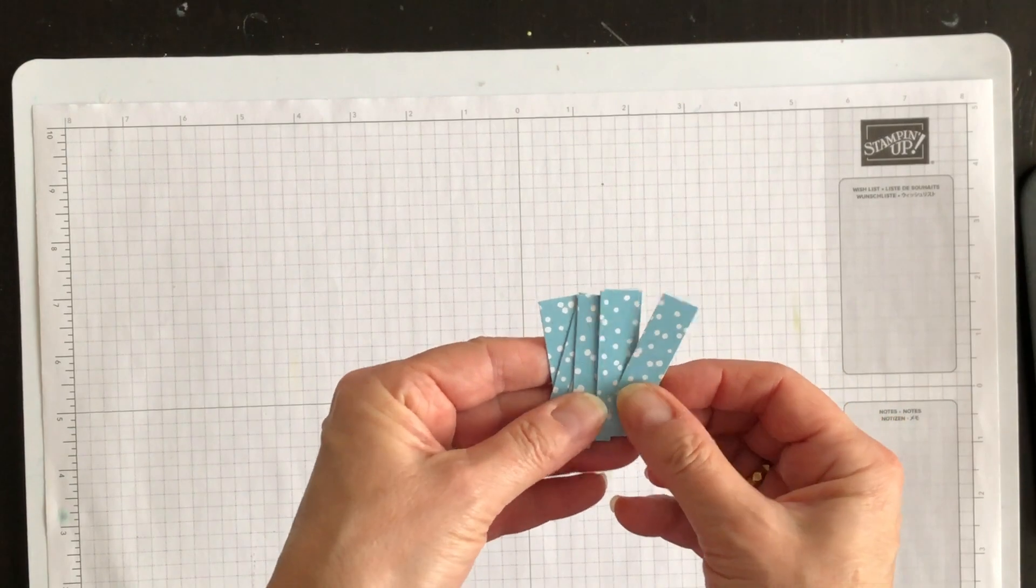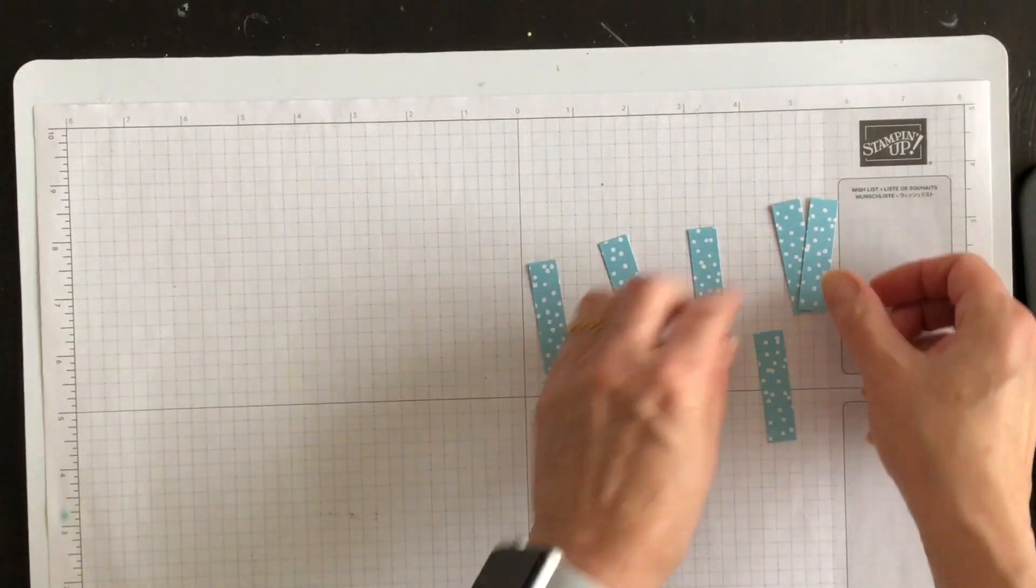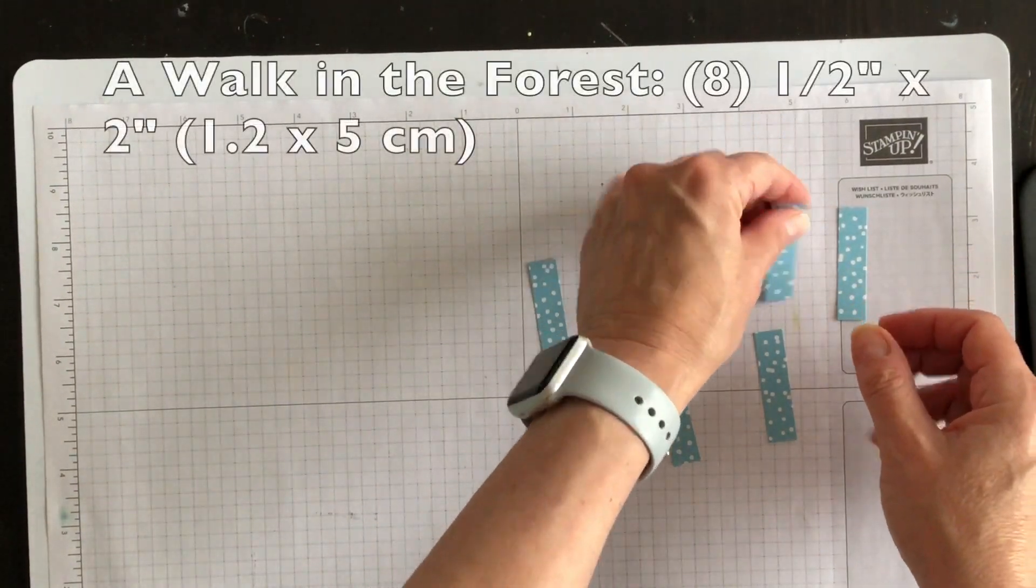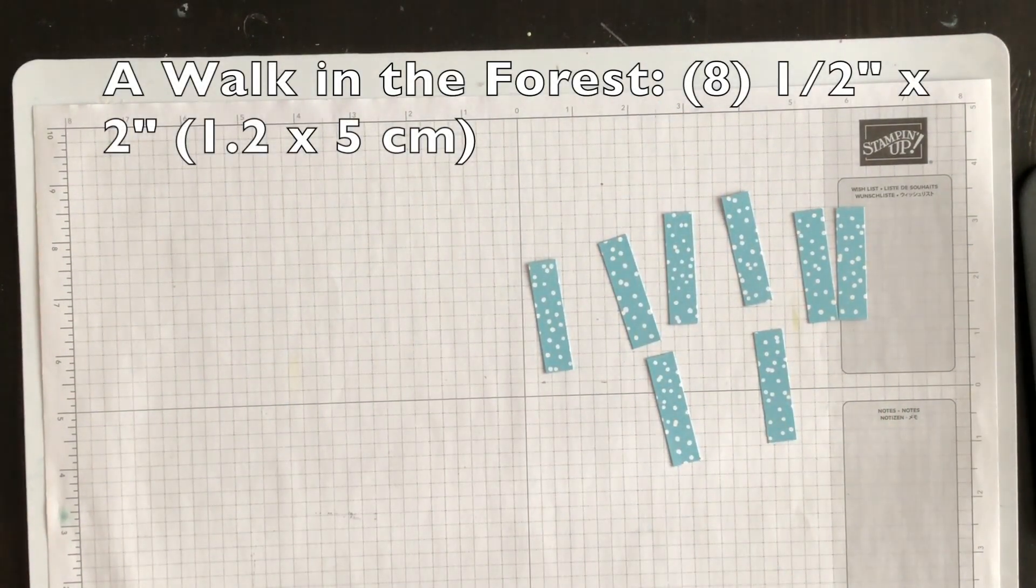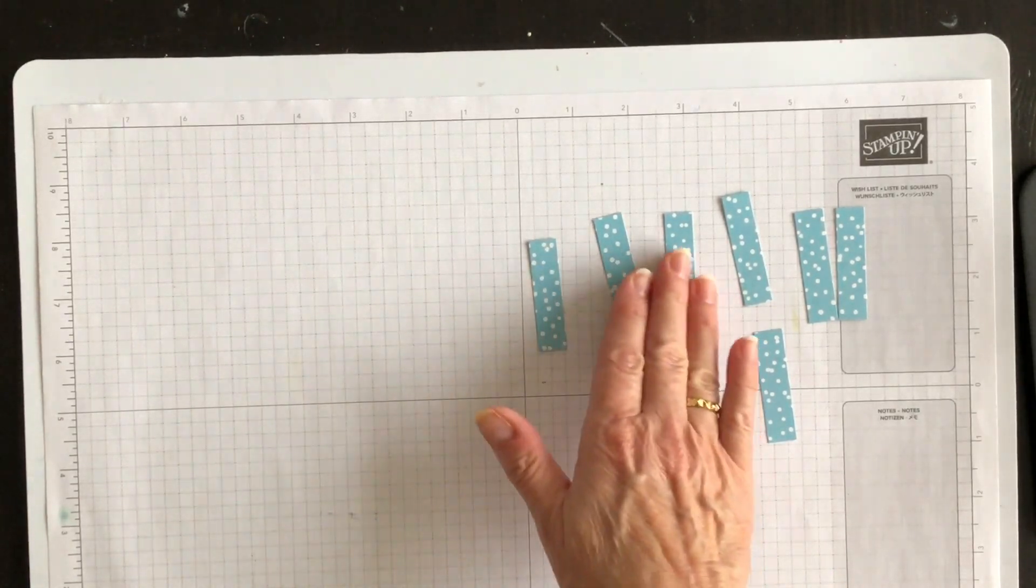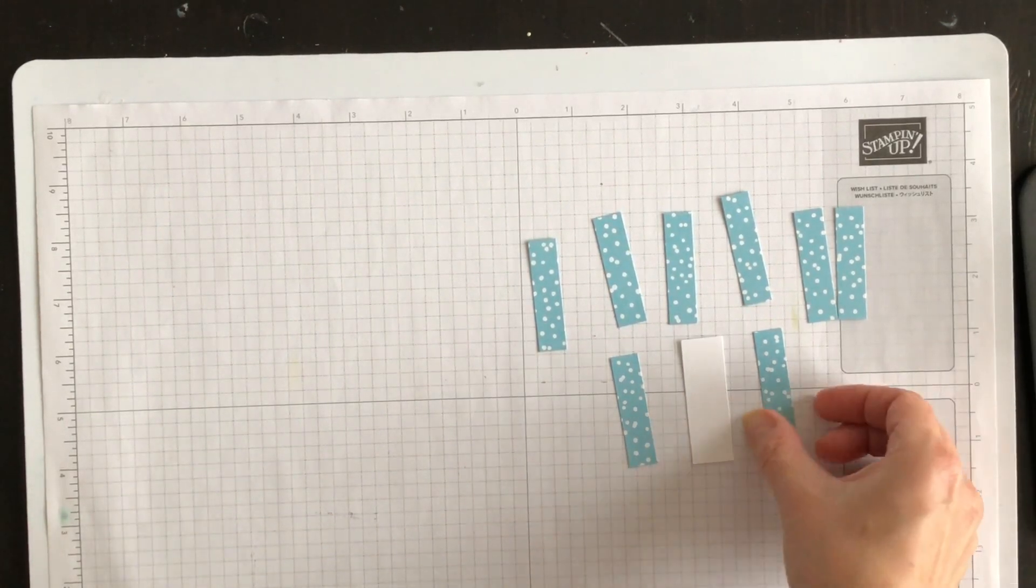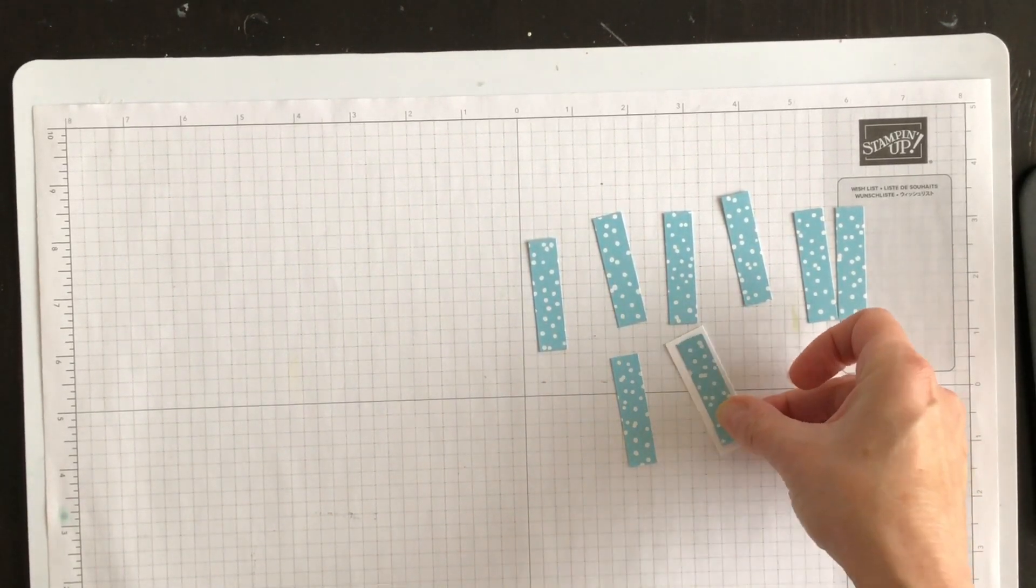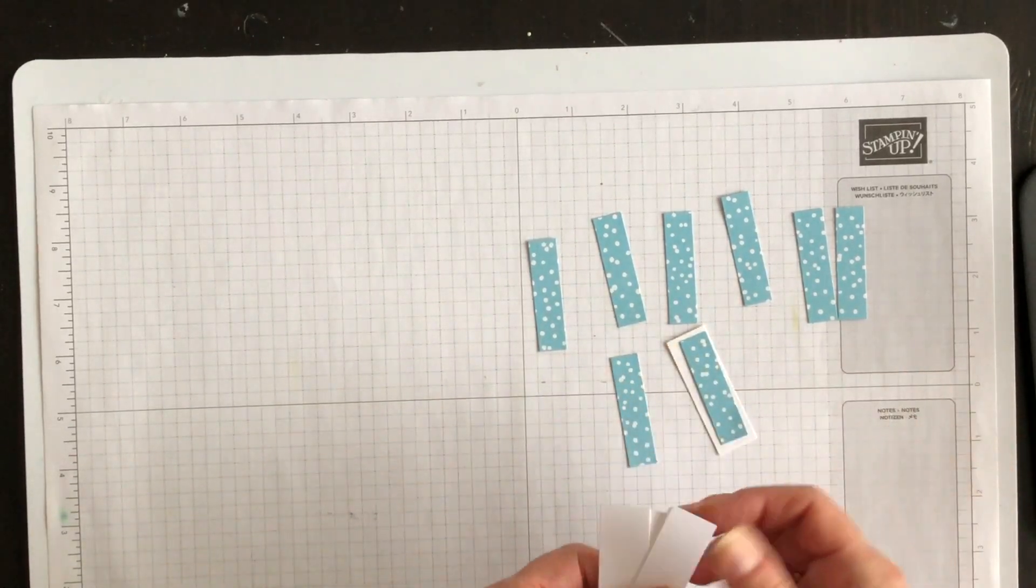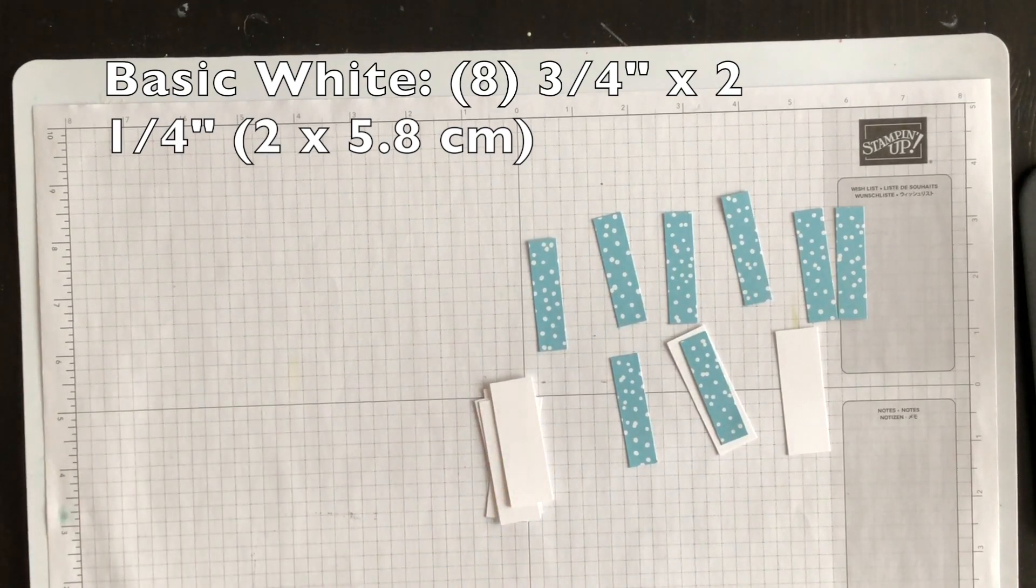So, while that is drying, what I want to show you next is how to use up some of the scraps of the Designer Series paper that you have. I know you have them lying around and we're going to use some of the Designer Series paper to add some visual interest to this fun fold. So, I have eight pieces of the A Walk in the Forest Designer Series paper and for each one of them, I want to layer them onto a strip of basic white.